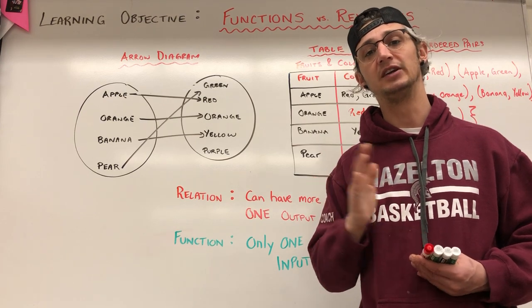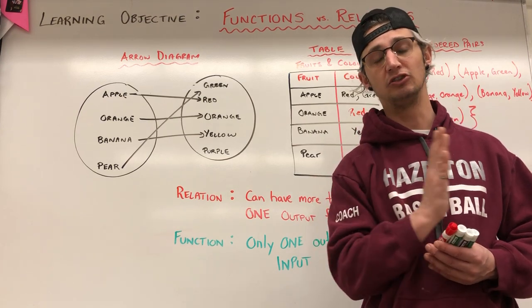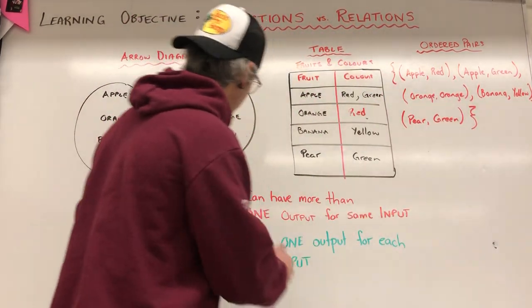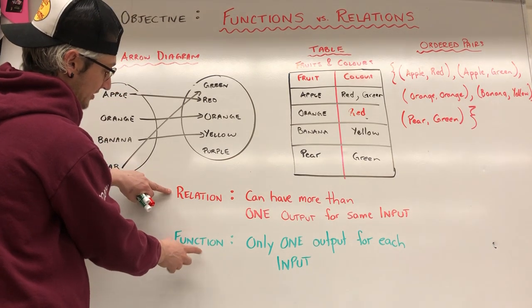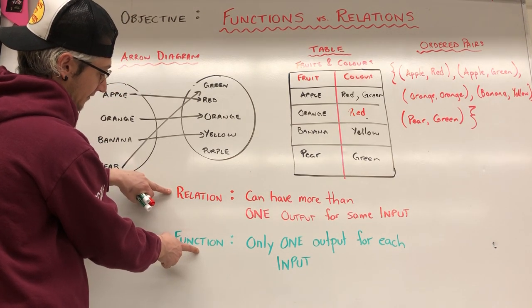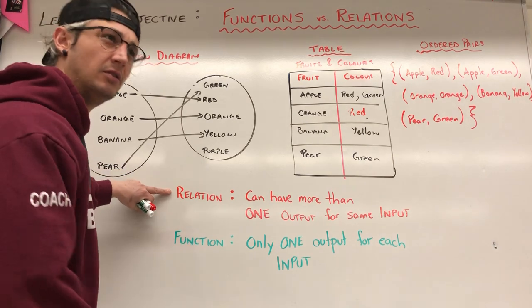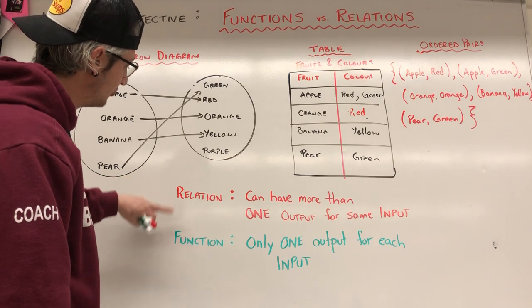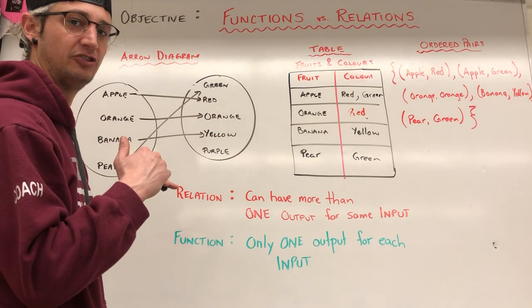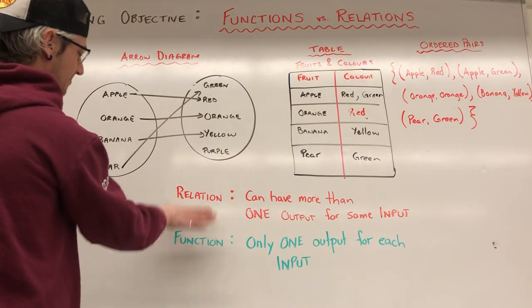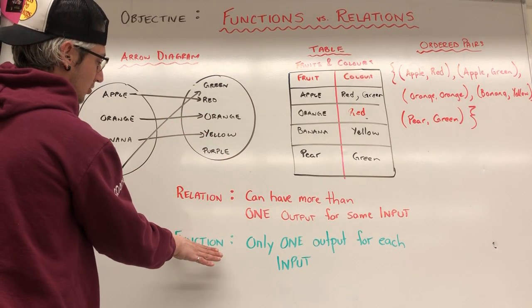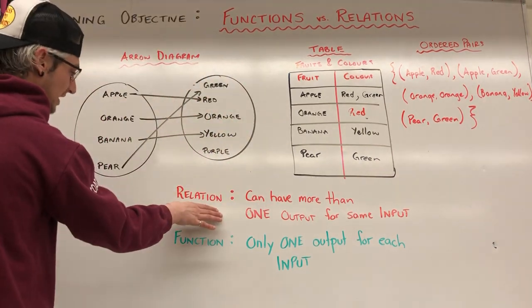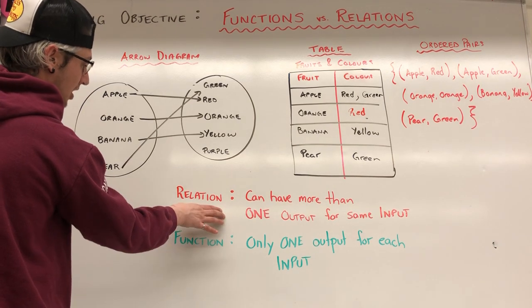And when we represent them graphically, there's a quick little test we can do to check whether it is a function or relation. Now, a function is a relation, but a relation is not necessarily a function. Wait, a function is a type of relation. It lives under the relation subset. So not all relations are functions, but all functions are relations. That's what I meant to say.